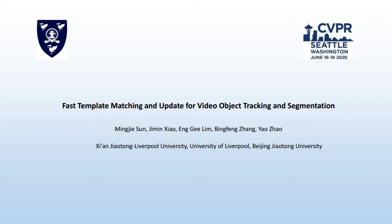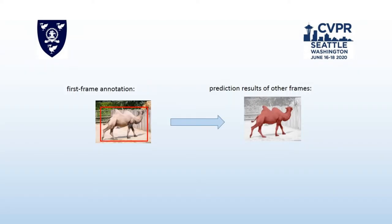Hi everyone, thank you for listening to the introduction of our paper, Fast Template Matching and Update for Video Object Checking and Segmentation. The task of this work is to generate the bounding box level or pixel level results of the target, according to the bounding box annotation in the first frame.